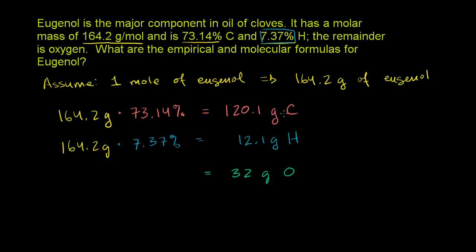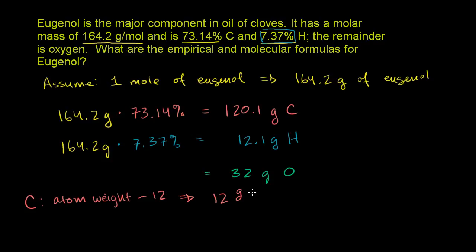Now we need to figure out how many moles of carbon, hydrogen, and oxygen we have. These are the three most common elements you'll deal with, and you can look them up on any periodic table. Carbon has an atomic weight close to 12 atomic mass units, so its molar mass is 12 grams per mole — meaning one mole of carbon has a mass of 12 grams.